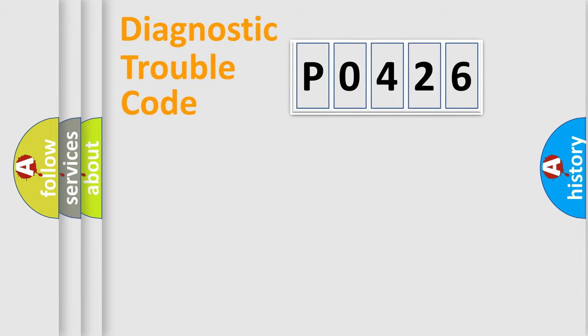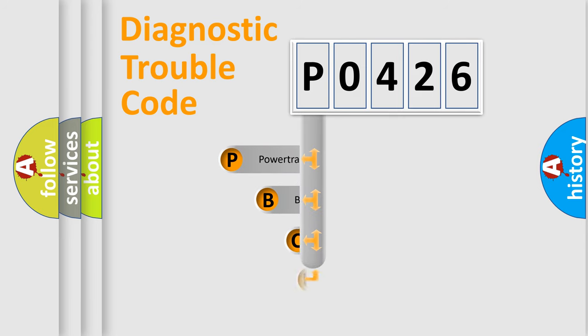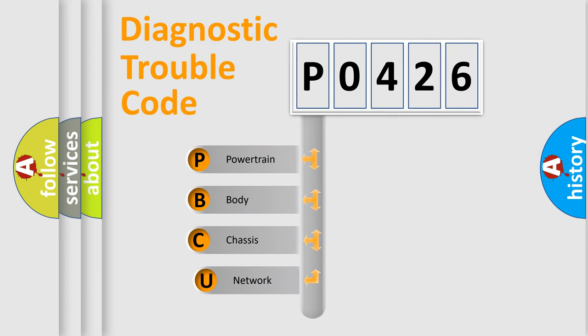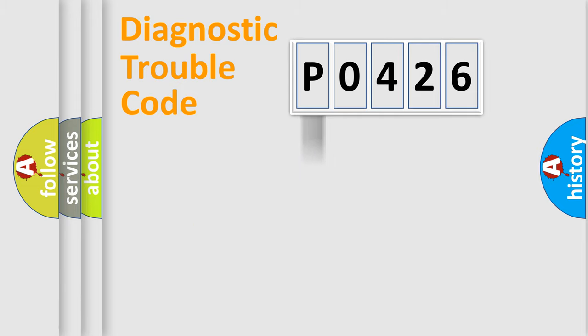Let's do this. First, let's look at the history of diagnostic fault code composition according to the OBD2 protocol, which is unified for all automakers since 2000. We divide the electric system of automobile into four basic units: Powertrain, body, chassis, network.